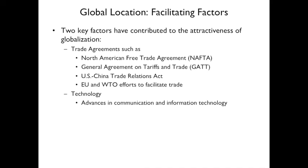When talking about global locations, there are some facilitating factors that contributed to the attractiveness of globalization. The first is trade agreements — things like NAFTA, GATT, the U.S.-China Trade Relations Act, the EU, and World Trade Organizations. The other factor is technology — it's easier and easier with communication and information technology to communicate with anyone around the world.